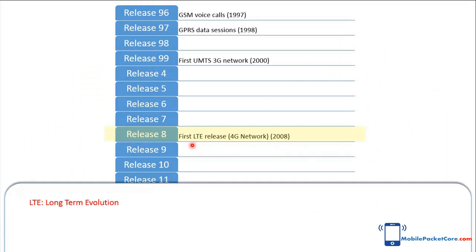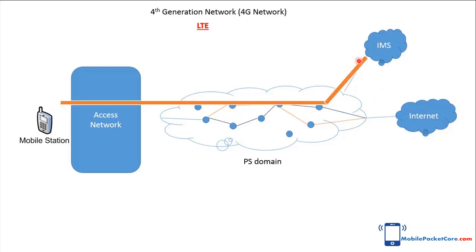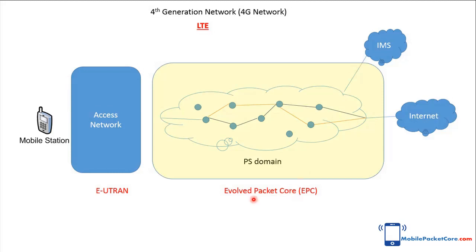3GPP introduced Release 8 in year 2008. In this release, Long-Term Evolution, LTE, existed. It is the fourth generation, 4G, network. Unlike previous generations, the LTE network has only a PS domain in the core network and doesn't have a CS domain for voice calls. The mobile station can make voice calls by connecting to an external IMS network through the PS domain. The PS domain architecture was enhanced and named the Evolved Packet Core. The access side of the LTE network is the E-UTRAN, which stands for Evolved UTRAN.